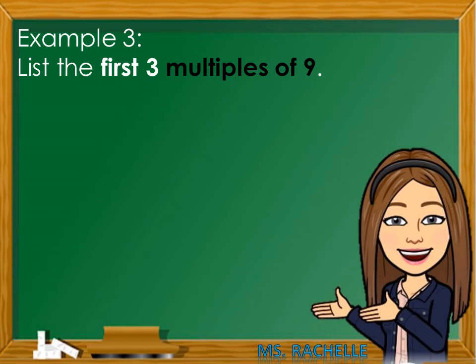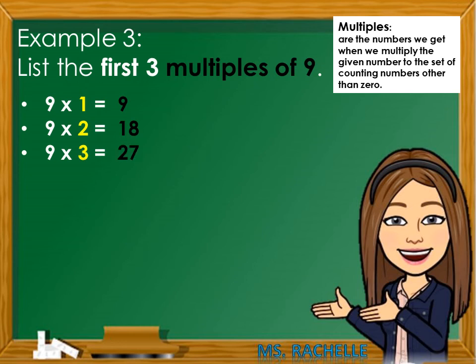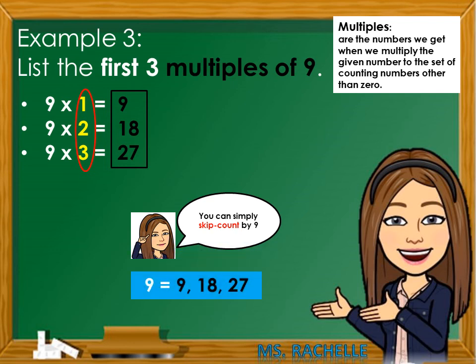Example number 3: List the first 3 multiples of 9. Multiples are the numbers we get when we multiply the given number to the set of counting numbers other than 0. Our given number is 9. We need to multiply 9 to the first 3 counting numbers: 9×1=9, 9×2=18, 9×3=27. So 9, 18, 27 are the first 3 multiples of 9. You can also use skip counting by 9.